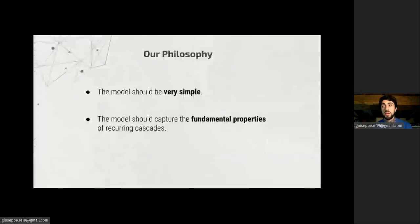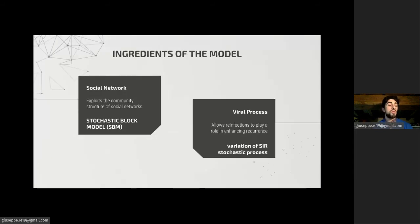The proposed model - I'll talk about the proposed model and our philosophy. The model should be very simple, but at the same time, it should capture the fundamental properties of recurring cascades. It has two main ingredients, the social network and the viral process. For the social network, we use a simple version of the well-known stochastic block model, because it exploits the community structure of social networks. While for the viral process, we use a variation of the SIR stochastic process which allows reinfections.